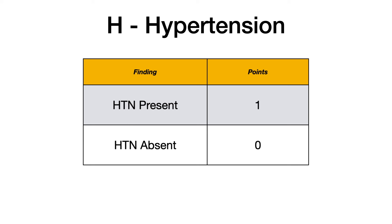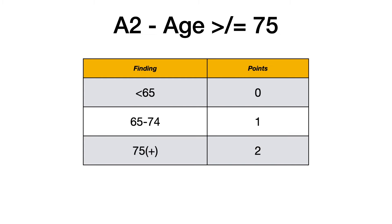The H in CHADS-VASC stands for hypertension. If the patient has hypertension, they get one point; if they don't, they get zero. The A in CHADS-VASC — sometimes written as A2 — stands for age. The reason there's a subscript two is because the patient could be given up to two points depending on their age.